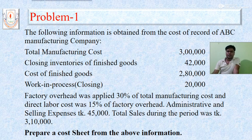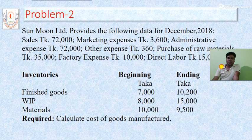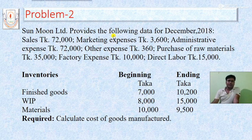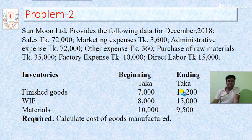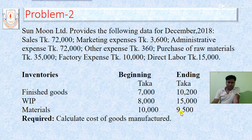Now we have an active homework problem. Sunmoon Limited provides the following data for December 2018. Sales: 72,000 taka. Marketing expenses: 3,600 taka. Administrative expenses: 72,000 taka. Other expenses: 3,60,000 taka. Purchases of raw materials: 35,000 taka. Factory expenses: 10,000 taka. Direct labor: 15,000 taka. Inventories — beginning and ending: Finished goods: 7,000 and ending 10,200. Work in process: 8,000 and 15,000. Materials: 10,000 and ending 9,500.